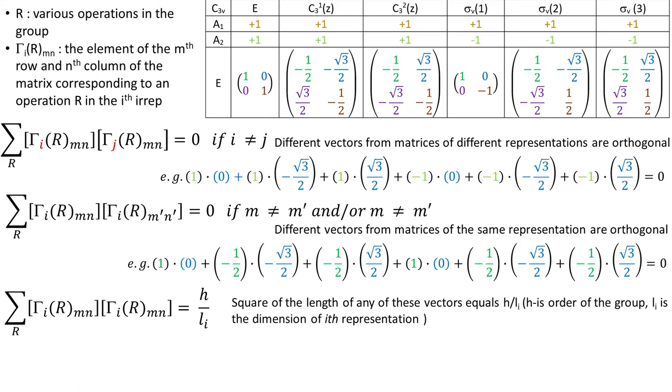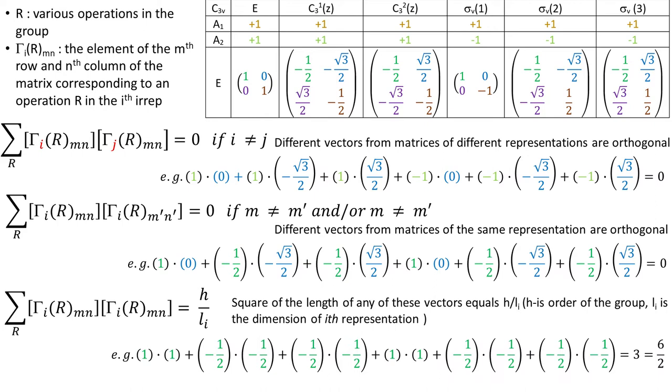The third equation is when we dot the same vector by itself. Needless to say we are in the same EREP. Here is the green vector doted by itself and we got 3 which is 6 the order of C3V group divided by 2 which is the dimension of E EREP from which the green vector comes from.